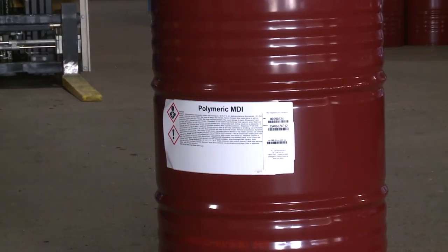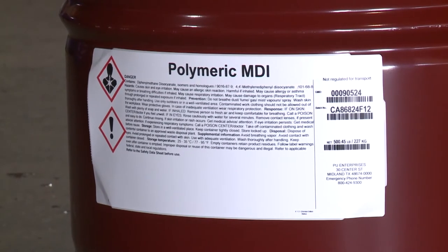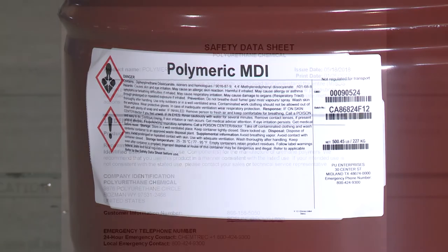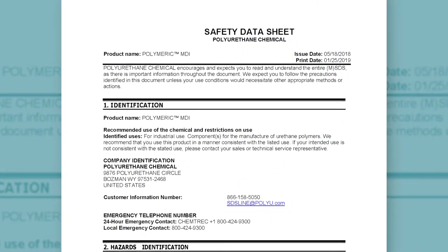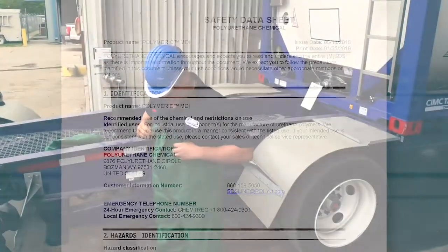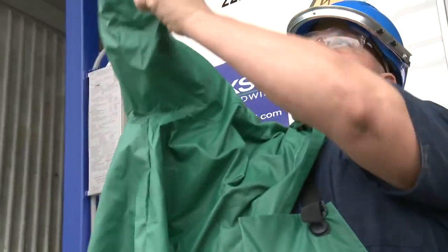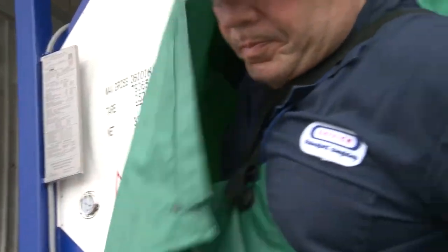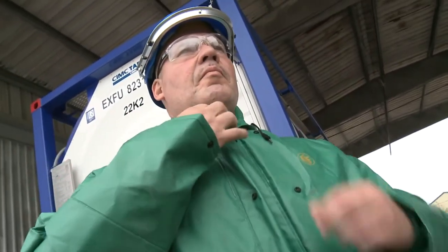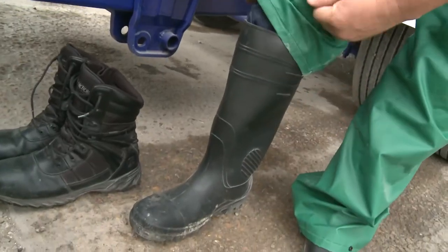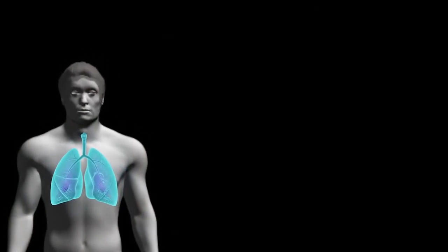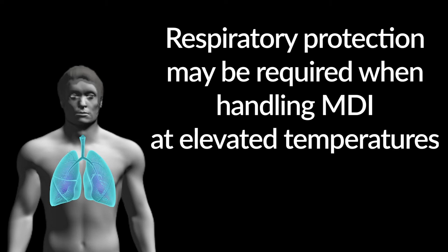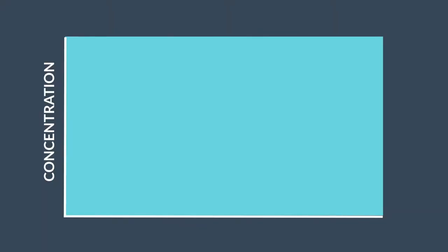As with other chemical shipments, hazard communication information is typically attached to containers either by a warning label or tag. If additional handling information for MDI is required, please refer to the manufacturer's safety data sheet. Everyone involved in the handling of MDI must be equipped with the appropriate personal protective equipment. This includes appropriate impervious clothing such as chemical protective suits, chemical splash goggles, and chemical resistant gloves and boots. Harmful vapor concentrations of MDI may occur at elevated temperatures. Approved respiratory protection may also be required when handling MDI at elevated temperatures. To prevent overexposure to airborne vapors, refer to applicable regulations for permissible exposure limits for MDI.